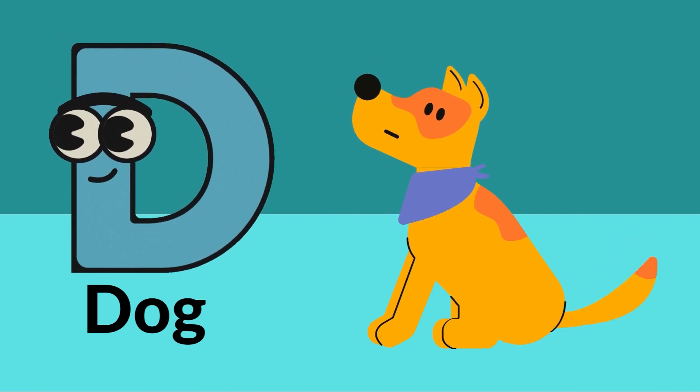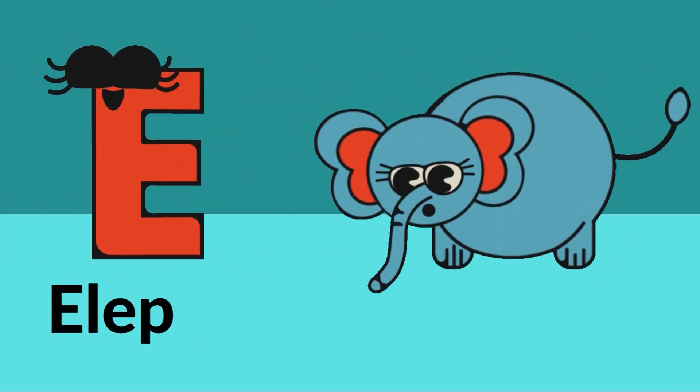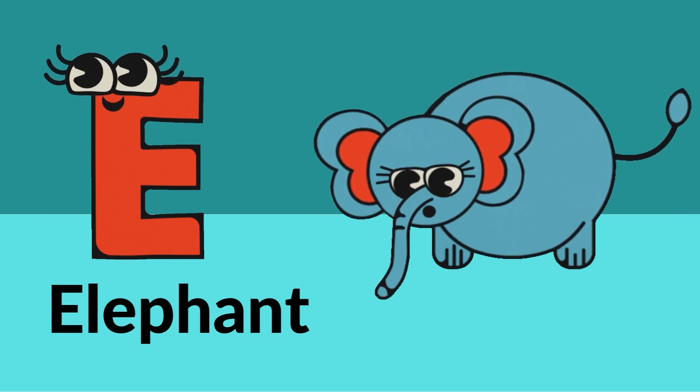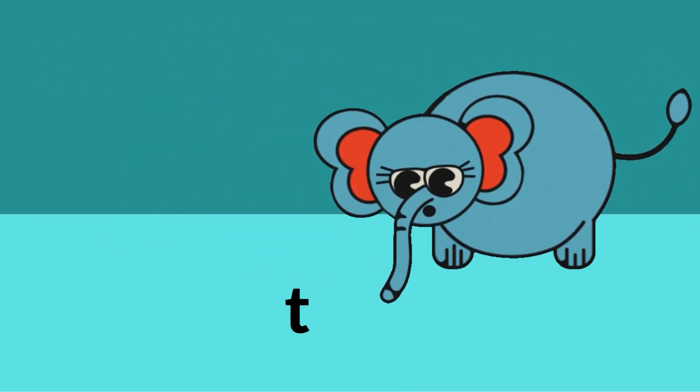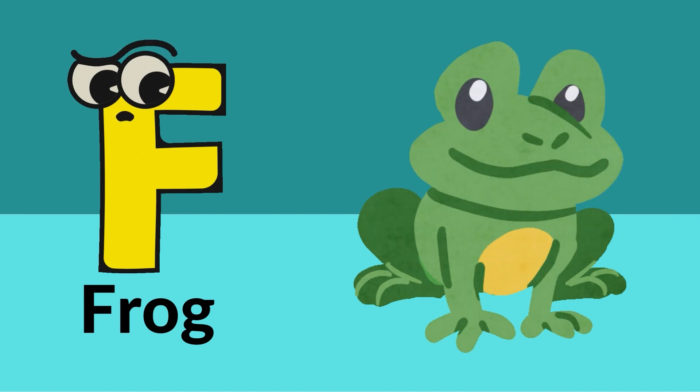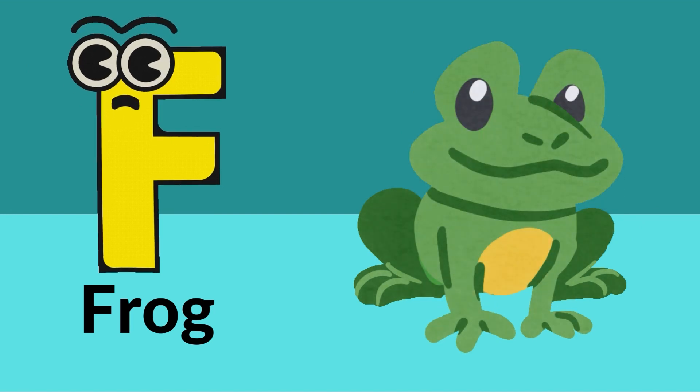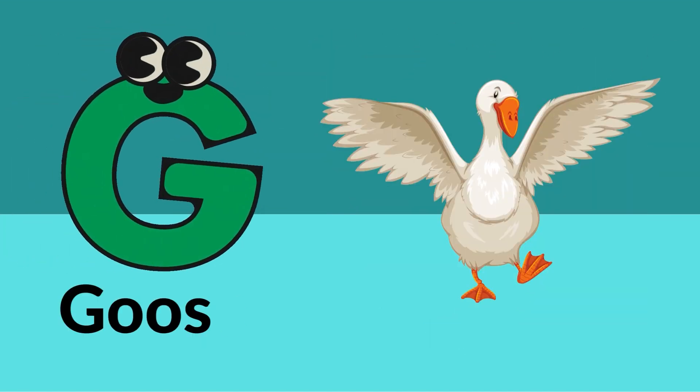E is for elephant, F is for frog, G is for goose.